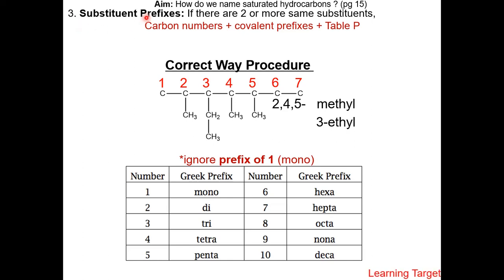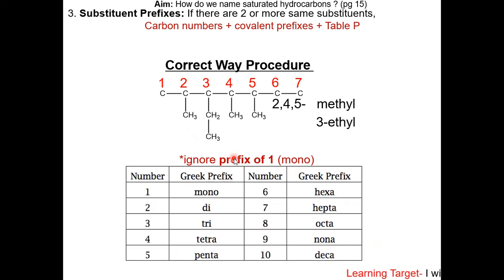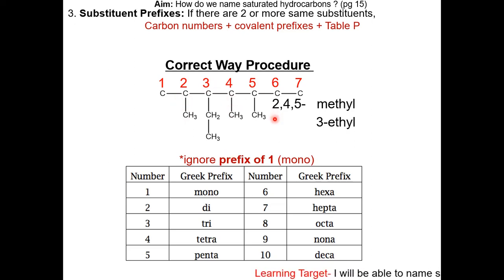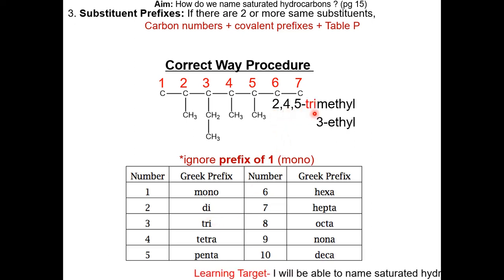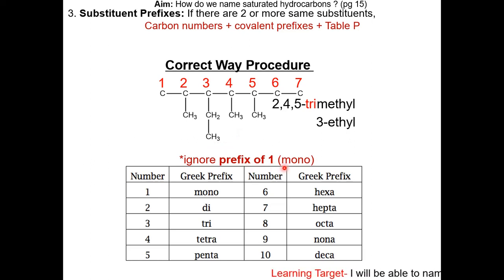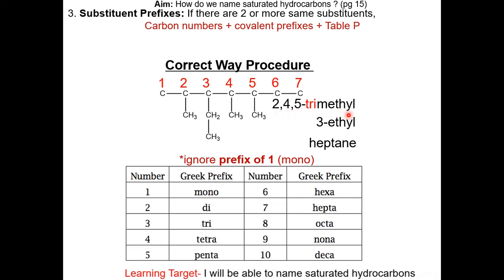In step 3, prefixes are added to substituents if there are two or more of the same substituents. The prefixes used for substituents are the covalent prefixes, not the organic ones. The organic prefixes on table P are used for the parent chain. In this molecule, there are three methyl groups, so the prefix for methyl will be tri — giving us 2,4,5-trimethyl. Since there is only one ethyl, there is no prefix — giving us 3-ethyl. So 2,4,5-trimethyl and 3-ethyl represent the substituents.